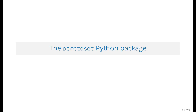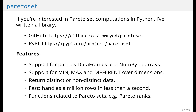I hope you find it useful. If you'd like to play around with these kinds of computations, I've written this package called Pareto set. It's on the Python Package Index and it's open source — it's on GitHub. It supports pandas DataFrames and NumPy n-dimensional arrays, supports minimization, maximization, and a different operator over any dimension. It can return distinct or non-distinct solutions if you have points that are exactly equal to one another, and it can easily handle millions of rows. I've also implemented some other functions related to Pareto sets, such as Pareto ranks, and you can read more about those concepts in the documentation.